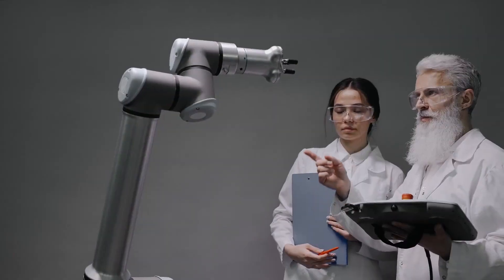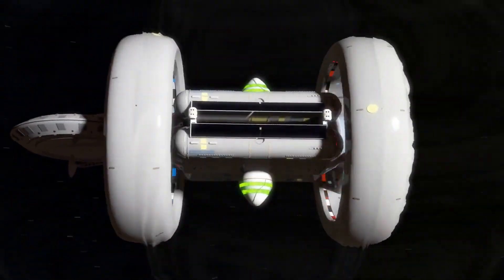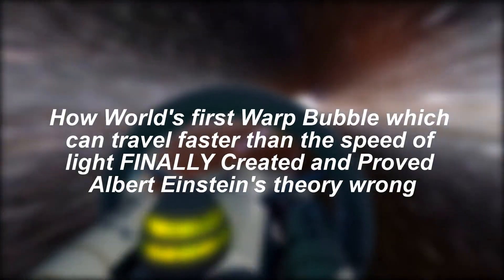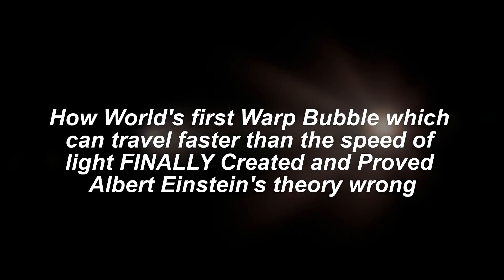However, scientists accidentally discovered something which can solve the problem of traveling faster than the speed of light. In this video, I'll show you how the world's first warp bubble, which can travel faster than the speed of light, was finally created and proved Albert Einstein's theory wrong.